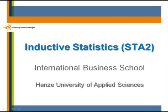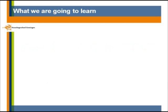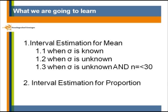Welcome to the inductive statistics course by International Business School of Hanse University of Applied Sciences. What we are going to learn today is: first, how to construct interval estimation for the mean when we know the population standard deviation, when it is unknown, and when it is unknown and the sample size is smaller than or equal to 30. Second, how to construct interval estimation for the proportion.